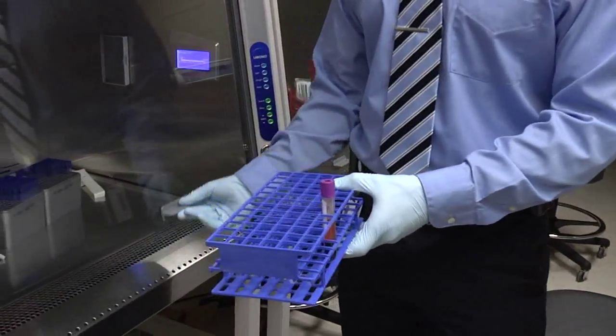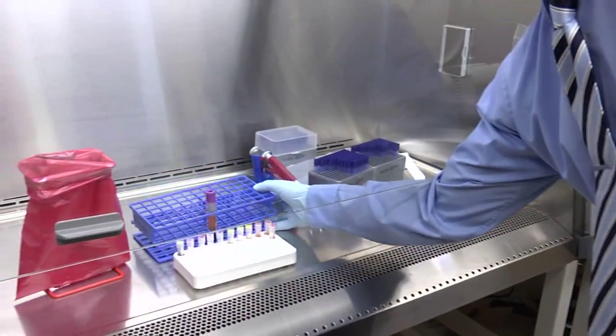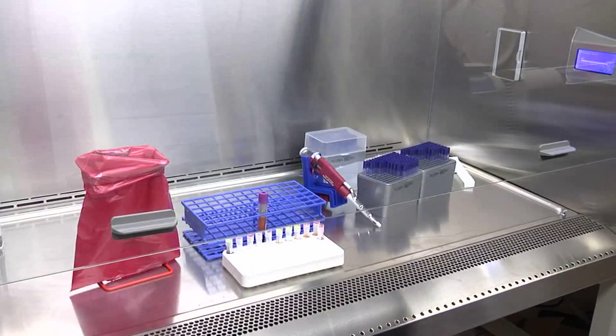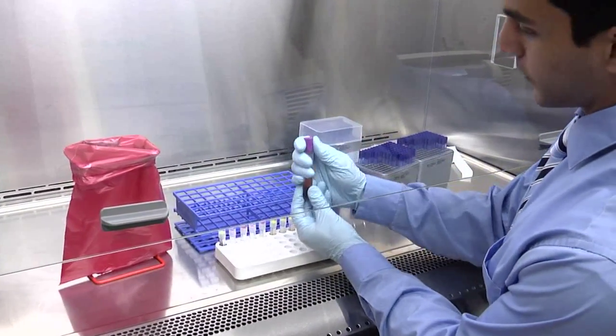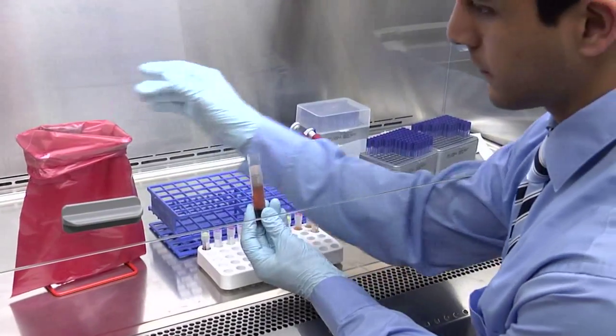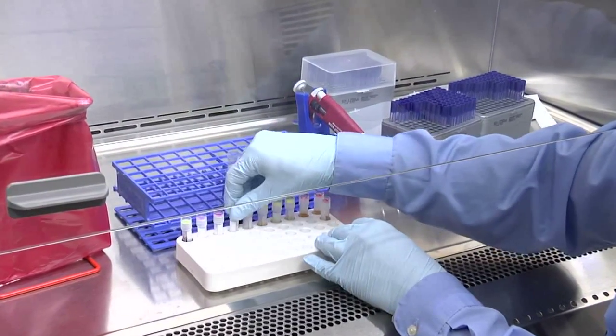After the sample is completing its processing, come over here to the hood and place the sample underneath the hood. Take out the blood tube, ease off the cap, place the tube back in the rack, and start removing the caps out of the vials.